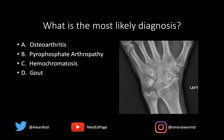First, it's important to understand that we have some chondrocalcinosis. We can see calcification outlining the TFCC — the triangular fibrocartilaginous complex — right here, and also chondrocalcinosis within the lunotriquetral ligament. That finding alone is not diagnostic of any particular entity; all four of these entities — osteoarthritis, pyrophosphate arthropathy, hemochromatosis, and gout — can have chondrocalcinosis. So that leaves us somewhat stuck.